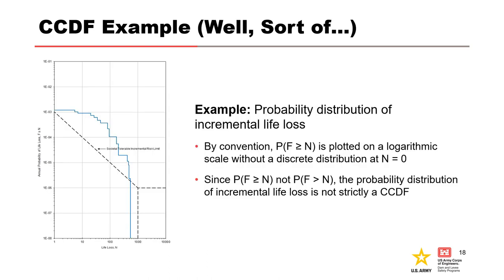The big FN chart is very close to being a CCDF, but it is not. We are plotting the cumulative probability F of being greater than or equal to life loss N, not the probability of F being greater than N. It is better described as a mixed distribution, since there is a discrete probability of zero life loss and a continuous probability of life loss greater than zero.